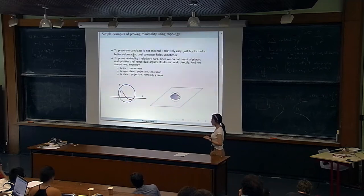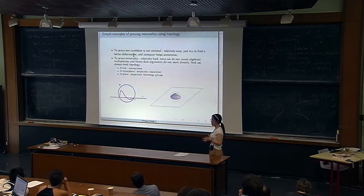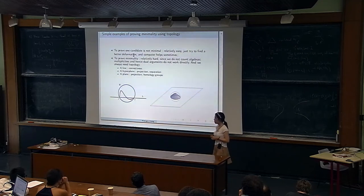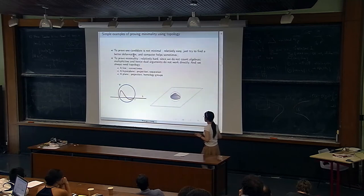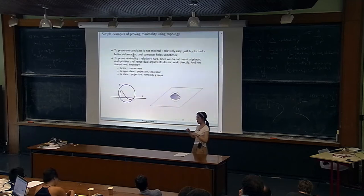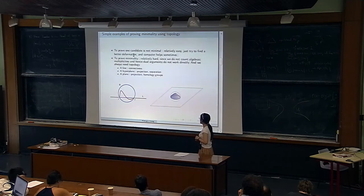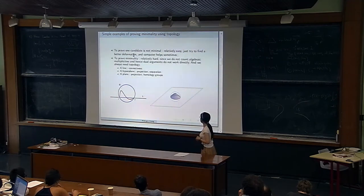How to verify whether a candidate is minimal or not? To prove a candidate is not minimal is relatively easier — you find a better deformation, often by pinching, sometimes using a computer. To prove minimality is harder because algebraic multiplicities are not counted, so direct calibration arguments from current theory do not apply directly. We always need topology. For example, to prove a line is minimal, we use the fact that any set connecting two endpoints of a segment has larger length than the segment — a topological condition.